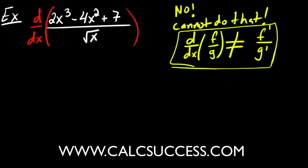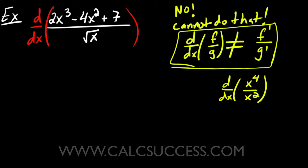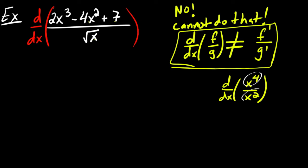As a little mini homework, try finding the derivative of the top divided by the derivative of the bottom, and then separately try dividing first and then taking the derivative. See if you get the same thing — and you'll see that you don't.